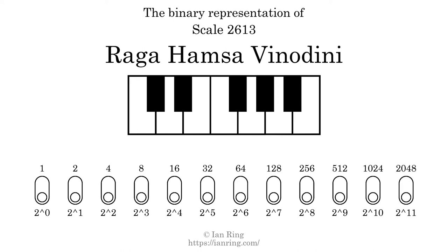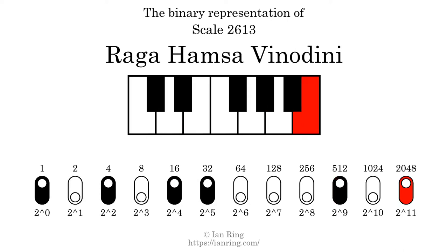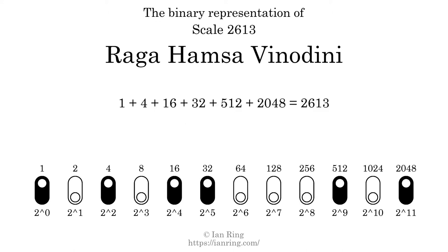The binary representation of this scale is determined by mapping tones of the scale to binary digits. Each binary digit represents a power of 2. To get the scale number, we add the powers of 2 together. The powers of 2 that are present in the scale, all added together, equals 2613. That is why the scale number, in decimal, is 2613.